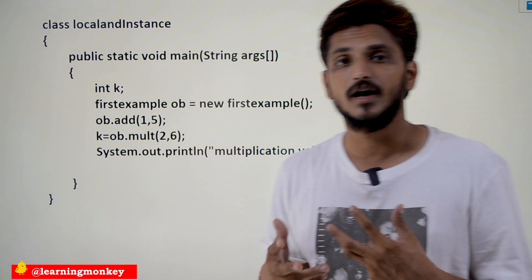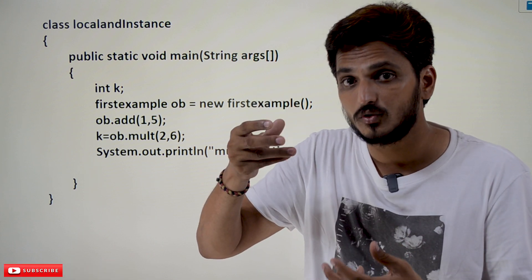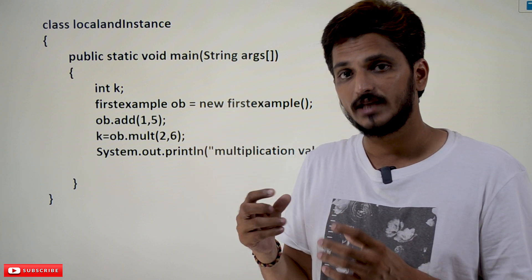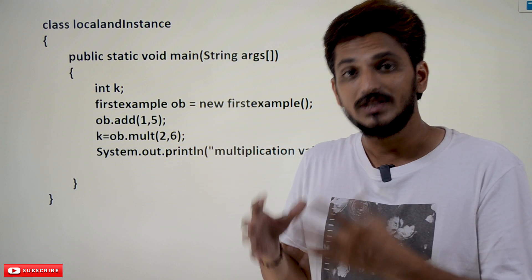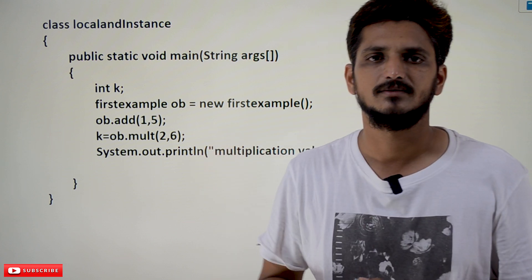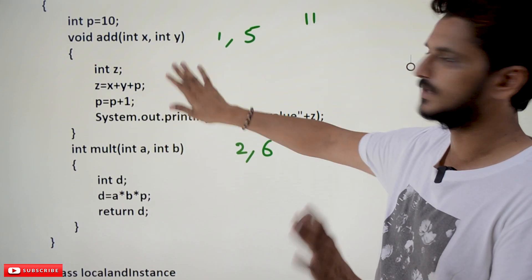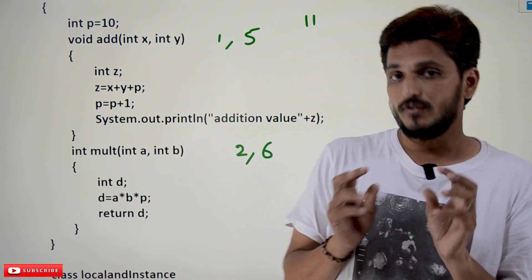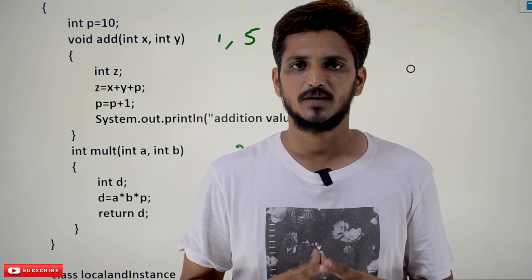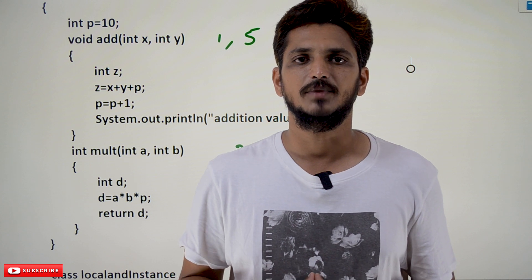According to our requirement, we need to understand which variables we have to take as global variables, means instance variables, which variables we need to consider it as local variables. This level of understanding you are going to get when we do the examples. You need to understand what instance variables and local variables means. Hope you understand this example. If you have any questions regarding the concept, please post your questions in the comment section below. Thanks for watching. If you haven't subscribed to our channel, please subscribe to our channel and press bell icon for the latest updates. Thank you.